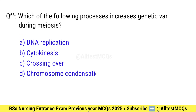Question number 68. Which of the following processes increases genetic variation during meiosis? Right option is C: Crossing over.